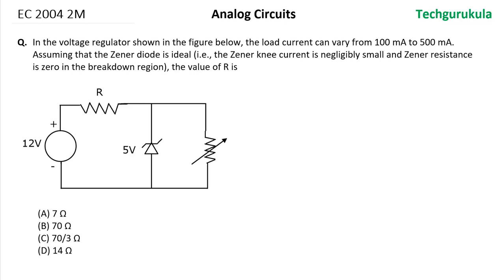This question came for 2 marks for EC gate in 2004. The question is: in the voltage regulator shown in the figure below, the load current can vary from 100 milliamperes to 500 milliamperes.